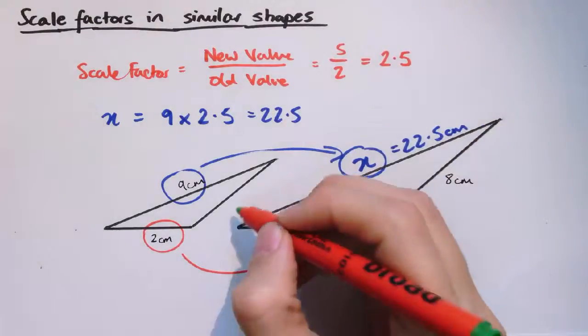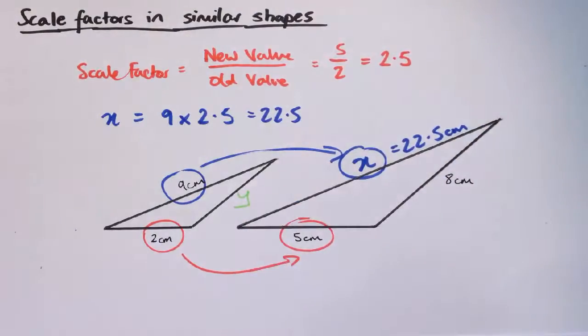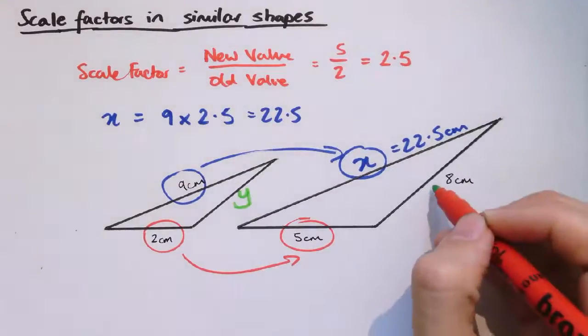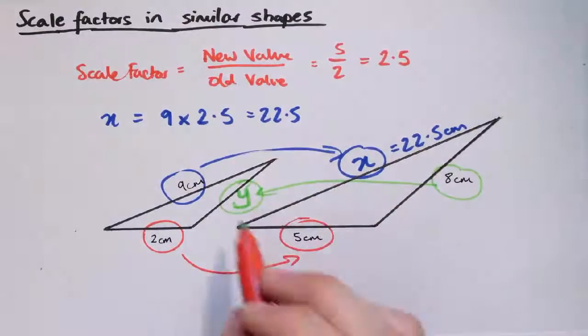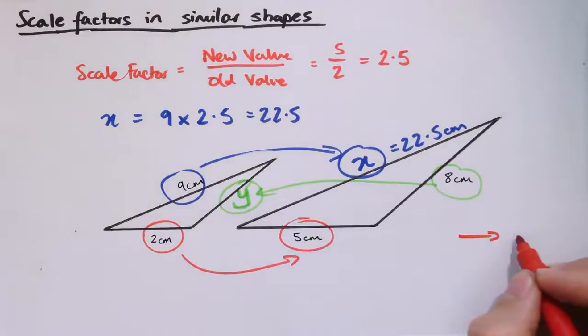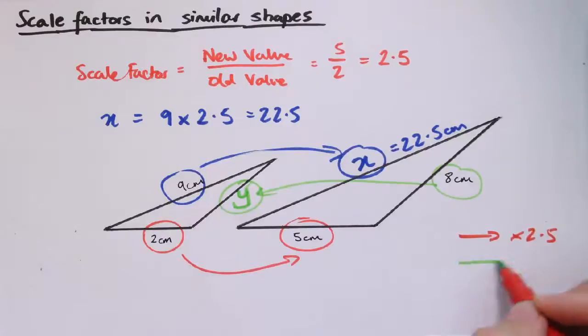To find this distance y, well, we want to go back from here to here this time. So if the scale factor going in this direction is 2.5 or multiplying by 2.5, to undo that we would do divided by 2.5, or you could equivalently say times one divided by 2.5.